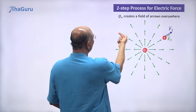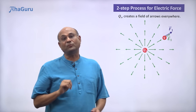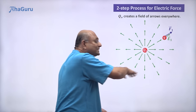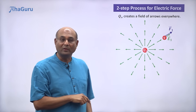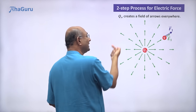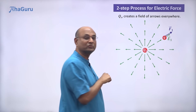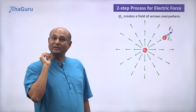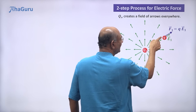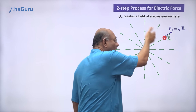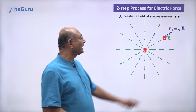Q naught is also creating E2, E3, E4, E5 — it is putting vectors everywhere. But these vectors are not exerting forces. Why? Because there are no charges there. The charge came to this location, so E1 is exerting a force on Q. If that charge came somewhere else, then E2 will exert a force on Q. Right now, only E1 exerts a force on Q. How much is that force? The force formula is very simple: F1 is just Q times E1 vector. Multiply the charge with the electric field vector and you get the force.